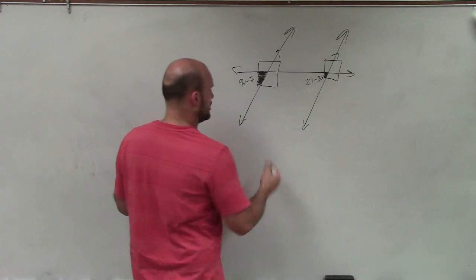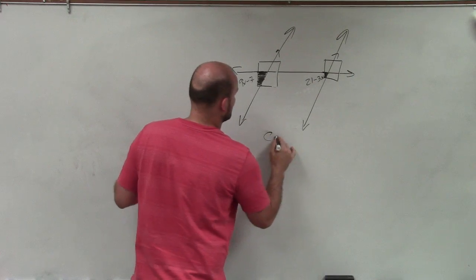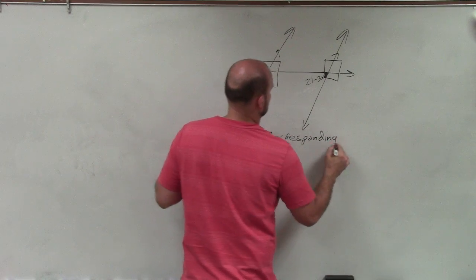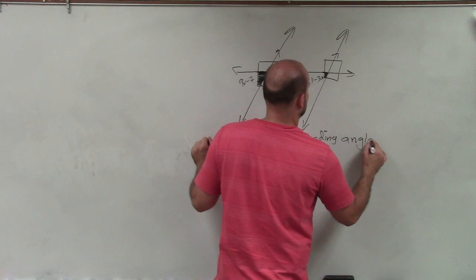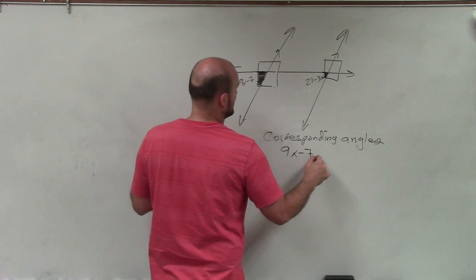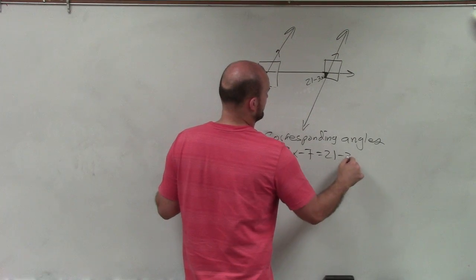So corresponding angles are equal in measurement. So therefore I can write, first of all let's write it. So I write corresponding angles to remind me of what angle relationship I'm using. And then they are equal in measure, so I say 9x minus 7 is equal to 21 minus 3x.